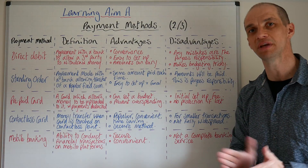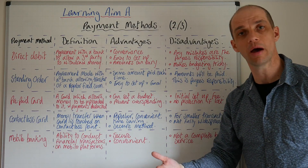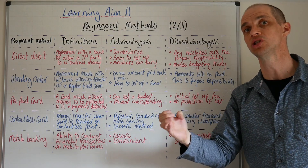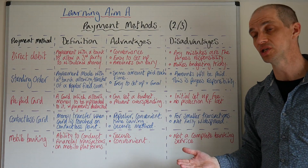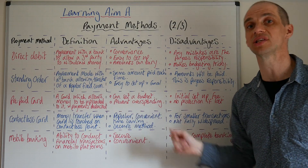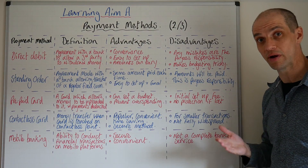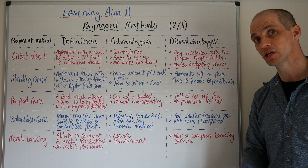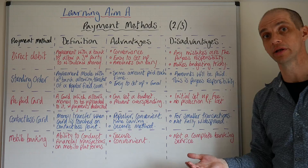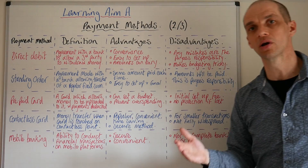Next up, let's look at a prepaid card — a card which allows money to be uploaded to it and payments deducted as you buy goods and services. This is really useful because you're dedicating a set amount to upload onto your card, which helps with budgeting. For example, if you put a hundred pounds on to last over the next 10 to 14 days, you can set a budget easily, preventing overspending. The downsides are that you'll likely have to pay an initial setup fee, and there's no protection if you lose the card, as the money is uploaded specifically to that card.